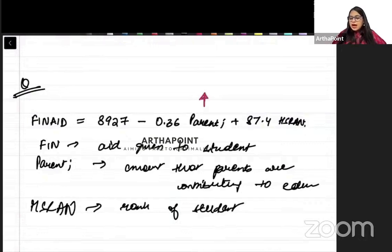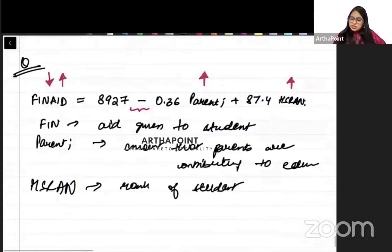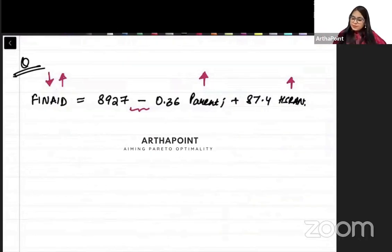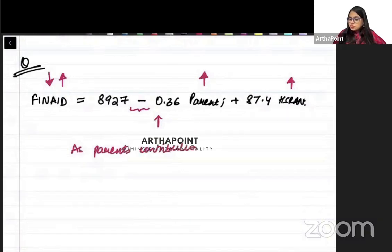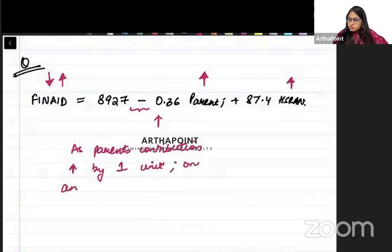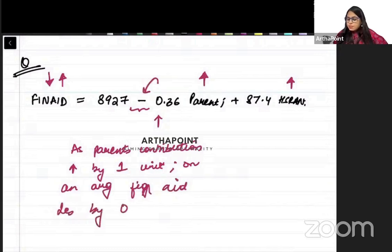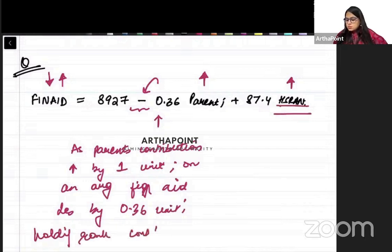So, this is very simple. As parent's contribution increases by one unit, on an average financial aid decreases - with a negative sign - decreases by 0.36 units, holding rank constant.